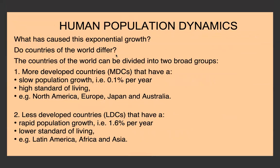Countries of the world differ significantly. There are two main groups: more developed countries and less developed countries — MDCs and LDCs. If you do geography, you'll have heard of MEDCs and LEDCs, which are more economically developed and less economically developed countries. This is a similar concept, but we're talking about population growth in general, whether countries are MDCs or LDCs.